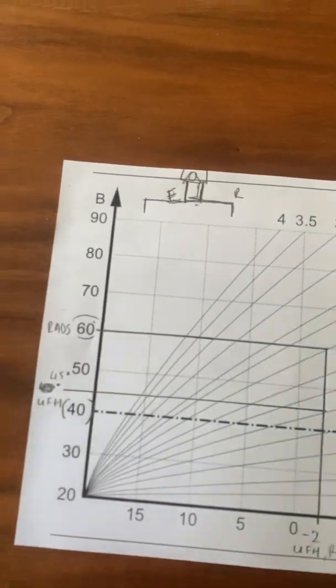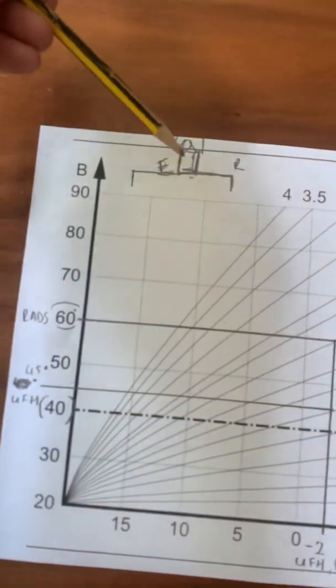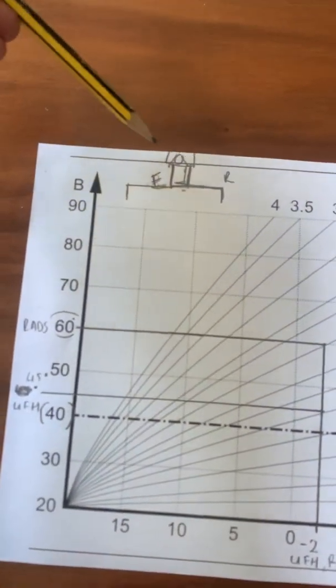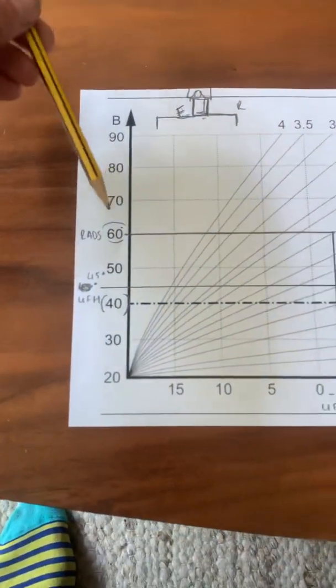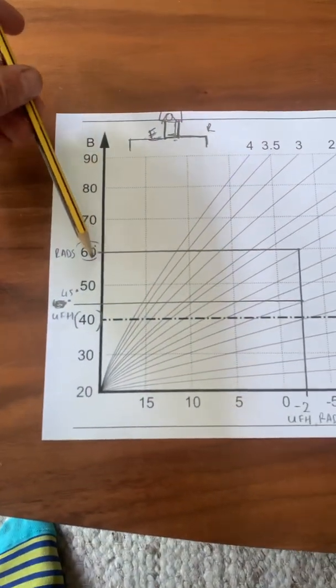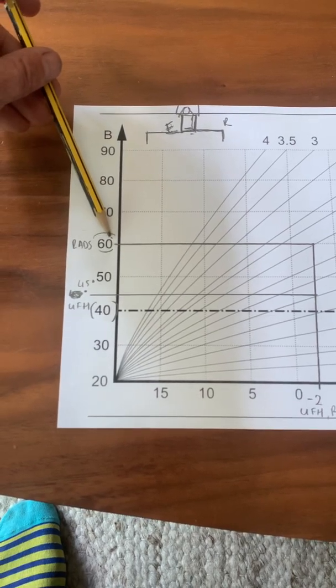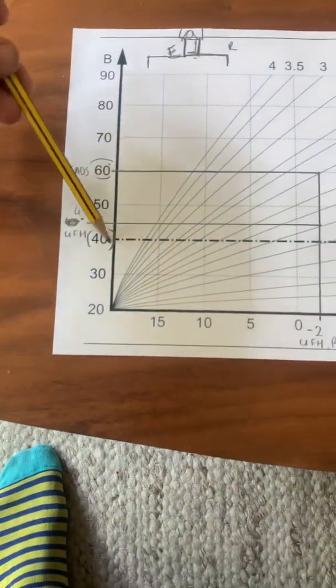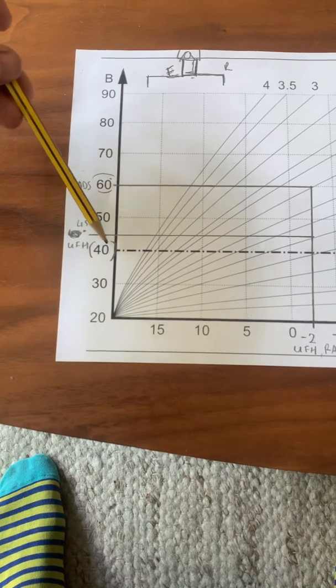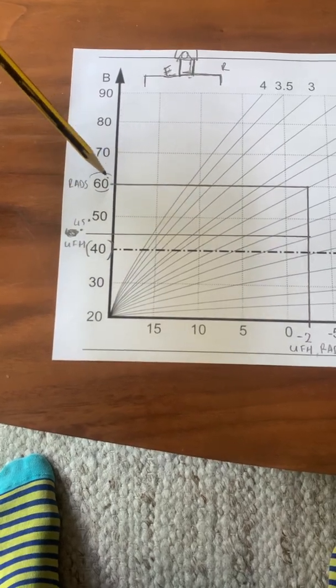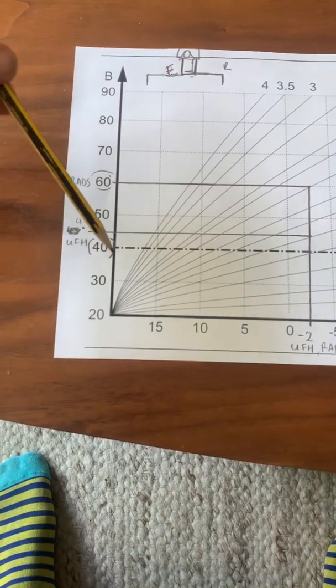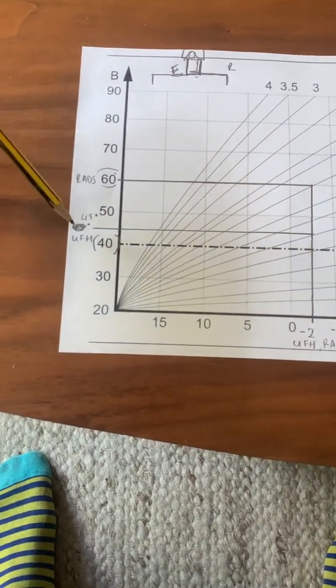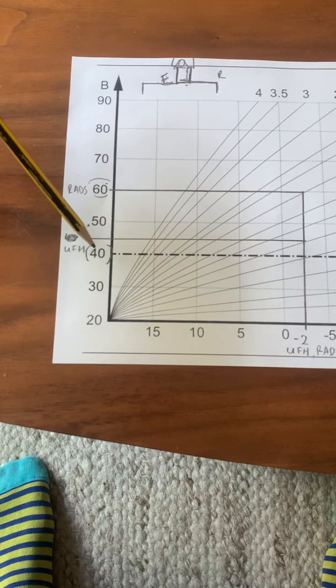So what we've got is our boiler running at 60 degrees, but our underfloor heating needs only 40 degrees. And that's what the mixer is doing: it's taking a certain amount of the 60 degrees and then it's cooling it with its own return water and cooling it down to 40 degrees by opening and closing the flow port or the return port.